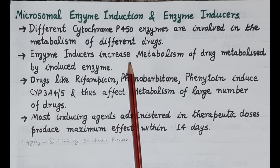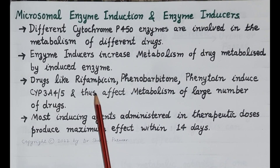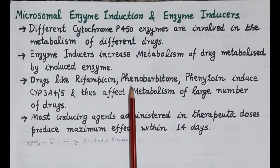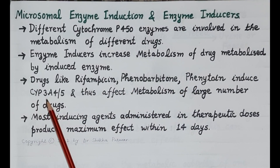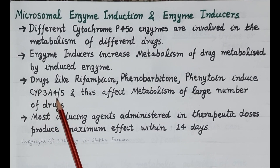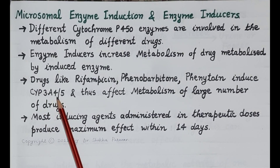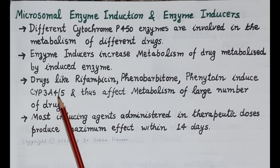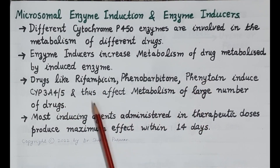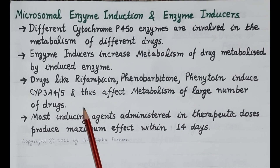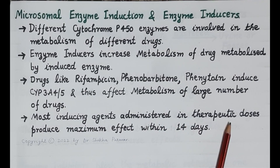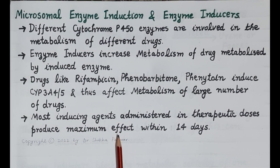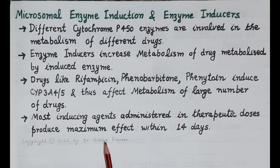Drugs like rifampicin, phenobarbitone, and phenytoin induce cytochrome 3A4 and cytochrome 3A5 enzymes. Since these enzymes metabolize more than 50 percent of drugs, these enzyme inducers affect the metabolism of a large number of drugs. Apart from this, most inducing agents administered in therapeutic doses produce maximum enzyme induction within 14 days.